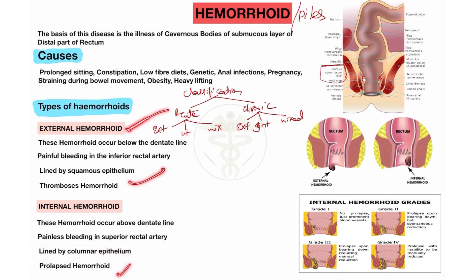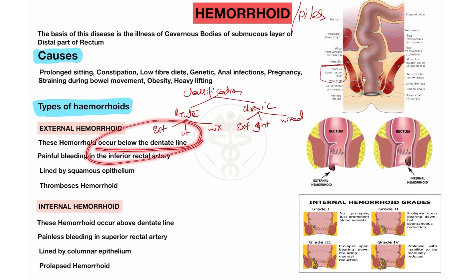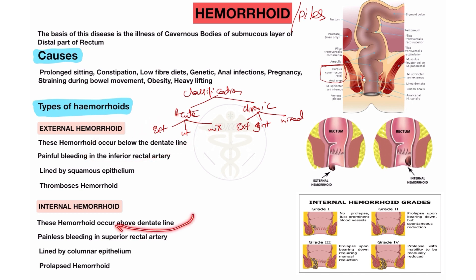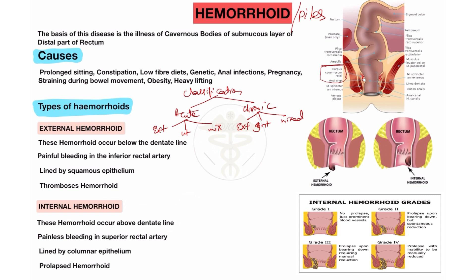So this is the main difference between external and internal hemorrhoid: when hemorrhoid occurs below the dentate line it is external hemorrhoid, and when it occurs above the dentate line it is internal hemorrhoid. Internal hemorrhoid is also divided into grades — first, second, third, and fourth grade.